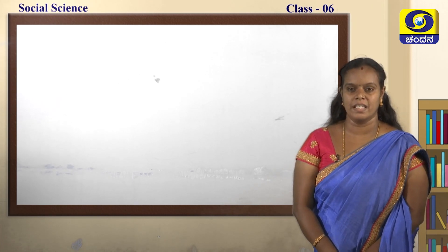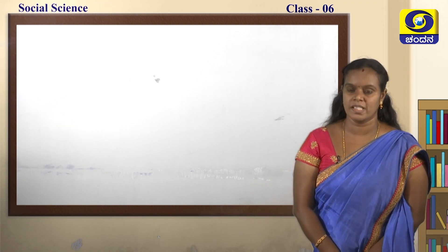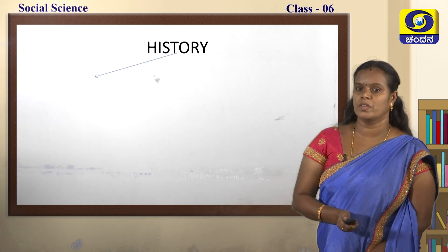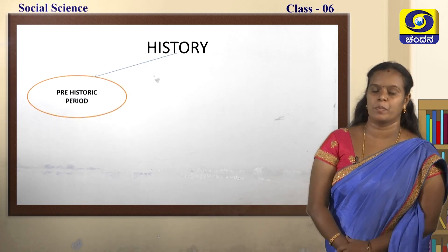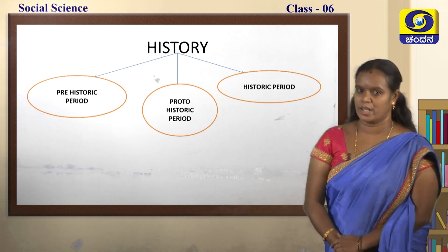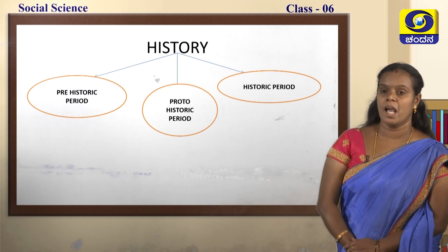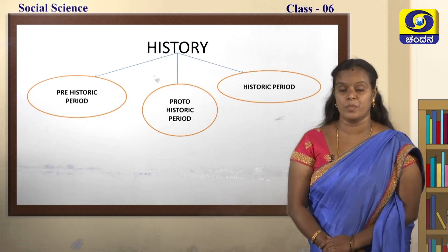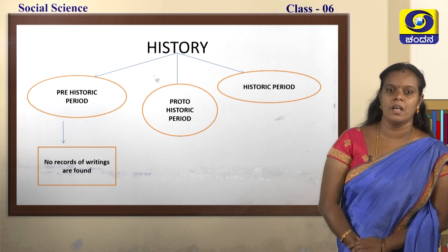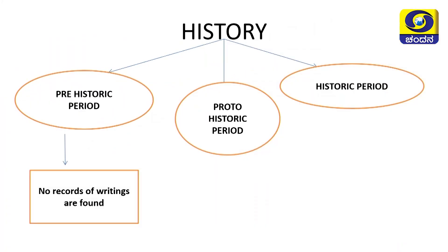Let's connect back to your activity and see how history is being divided into three parts. History is divided into three main parts based on the criteria of the script available or the written records. The first one is the prehistoric period. The second one is the proto-historic period. And the third one is the historic period. Prehistoric period is a period which has no written records. Where no records of writings are found is called the prehistoric period. Example for this is the Stone Age.